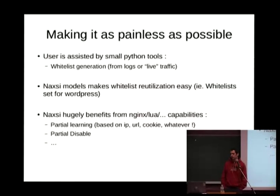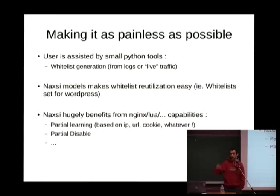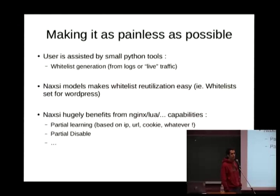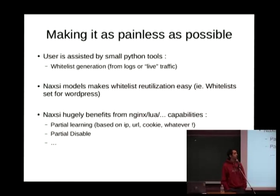Since writing all whitelists by hand can be quite painful, NAXI comes with various tools to make configuration as painless as possible — this is what we call learning mode. In production mode, NAXI drops the request as soon as a limit score is reached and redirects it to another location defined by the configuration, for example a page with a CAPTCHA to handle potential false positives. Small Python tools will help you generate whitelists based on exception rates relative to total traffic, either from logs or live, where a daemon listens at a specific location in learning mode and catches potentially malicious requests to help you decide whether it is a real attack or a false positive.